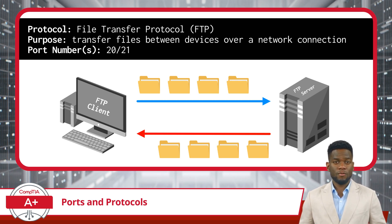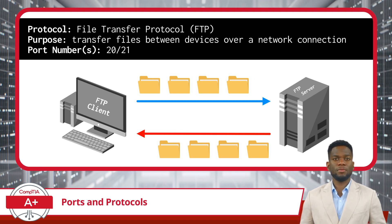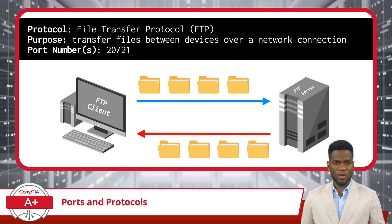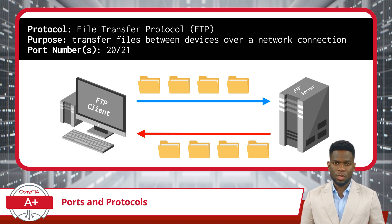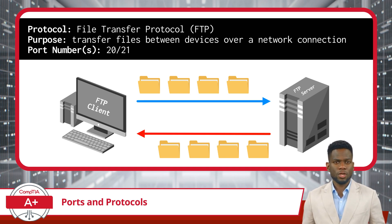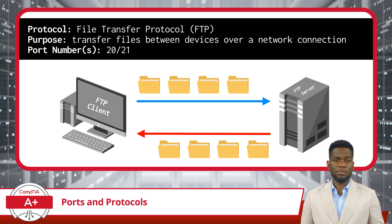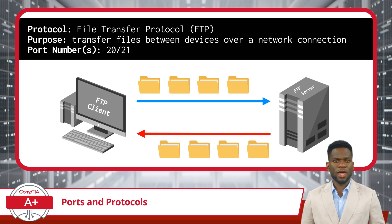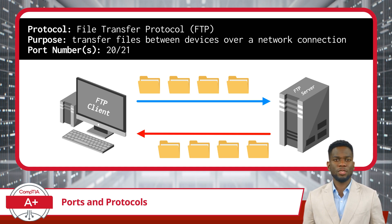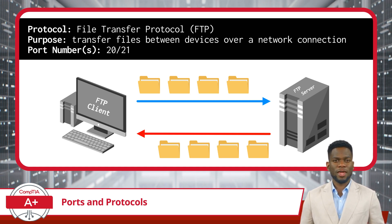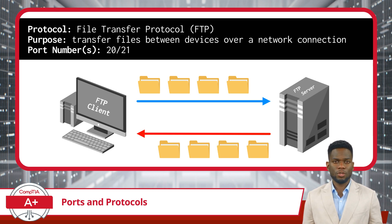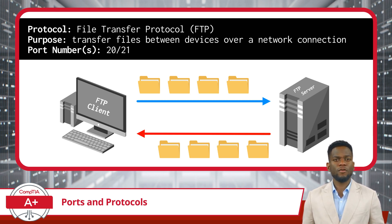Let's start with the File Transfer Protocol, commonly known as FTP. This is a standard network protocol designed for transferring files between devices over a network connection. FTP enables users to upload files from their local computer to a remote server, or download files from a server to their computer. FTP typically uses two ports: port 20 and port 21. Port 21 is the control port used for establishing a connection and exchanging commands, while port 20 is the data port used for the actual transfer of files.